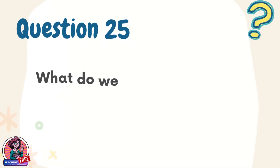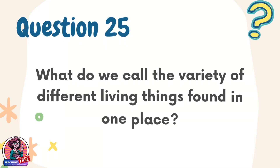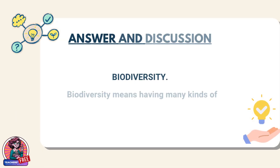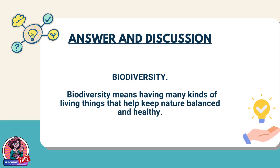Question 25. What do we call the variety of different living things found in one place? Answer: Biodiversity. Biodiversity means having many kinds of living things that help keep nature balanced and healthy.